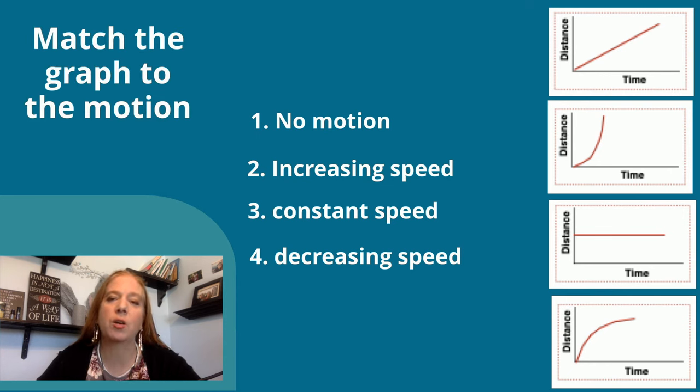Match the graph to the motion. Which one is showing no motion, increasing speed, constant speed, and decreasing speed?